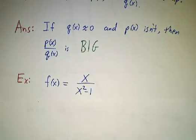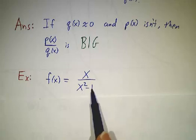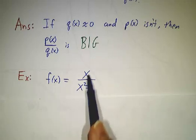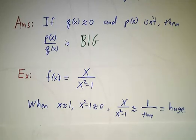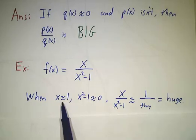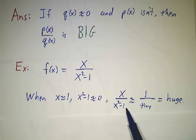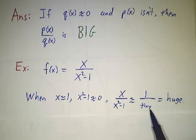So for example, let's look at the function x over x² - 1. When x is one, the denominator is zero. The function doesn't make sense. You can't divide by zero, so that's not in the domain. But you can ask what happens when you get close to one. Whenever x is close to one, x² - 1 is close to zero. And x over x² - 1 is something really close to one divided by a tiny number, and that means a huge number.